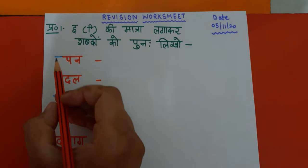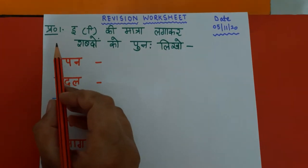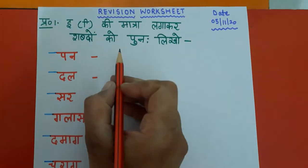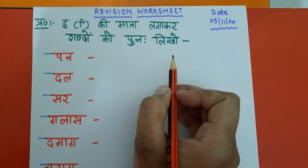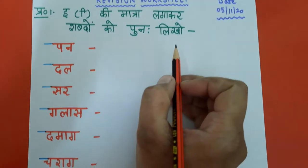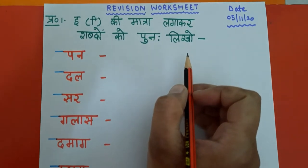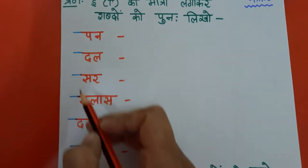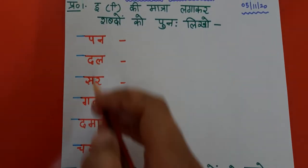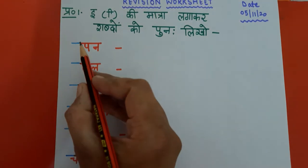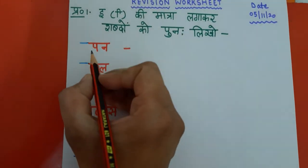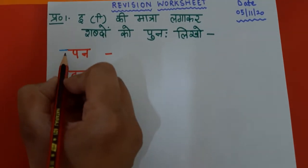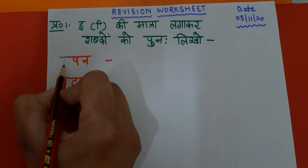In question number one, chhoti E ki maatra laga kar shabd ko punha likho. Question number one mein aapko kya karna hai? Yaha pe kuch shabd diya hai, unmae aapko chhoti E ki maatra lagani hai. Yaha pe hum chhoti E ki maatra lagaengi.